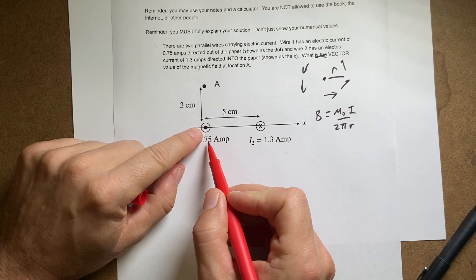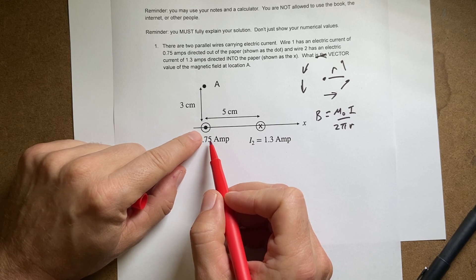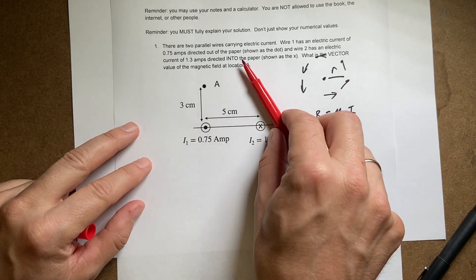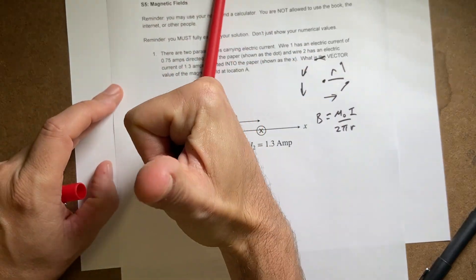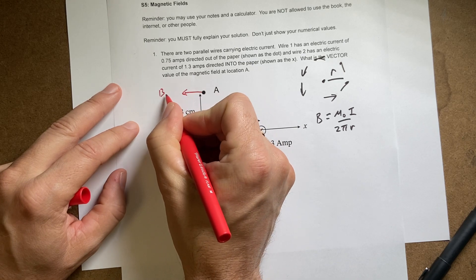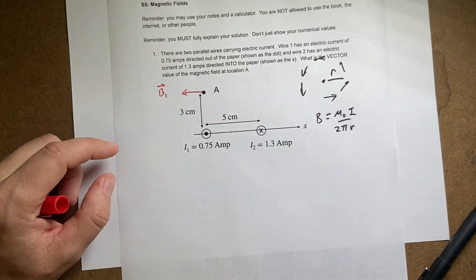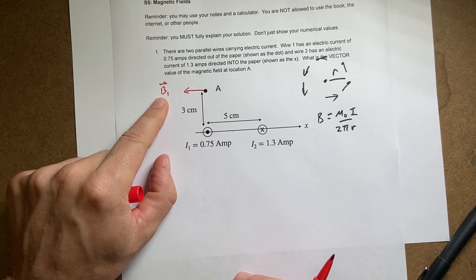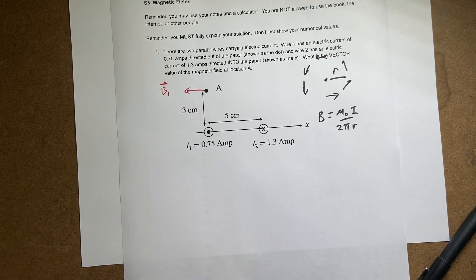Here I have 0.75 amps coming out, so this is going to make a magnetic field this way. When I'm up here at point A, it's going to be in the negative x direction. I'll call that B₁. That's pretty easy to find - I know the radius, so I can find the magnitude and the vector.